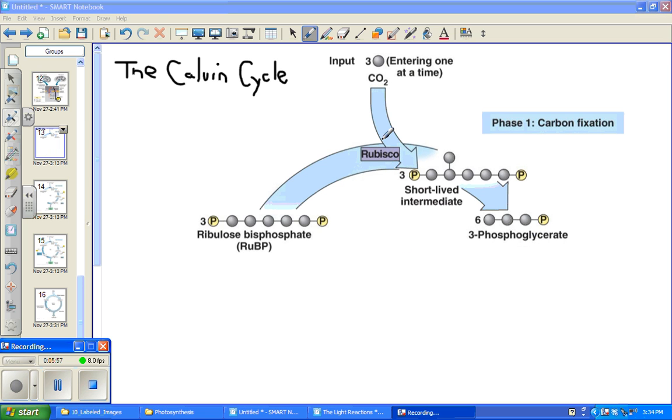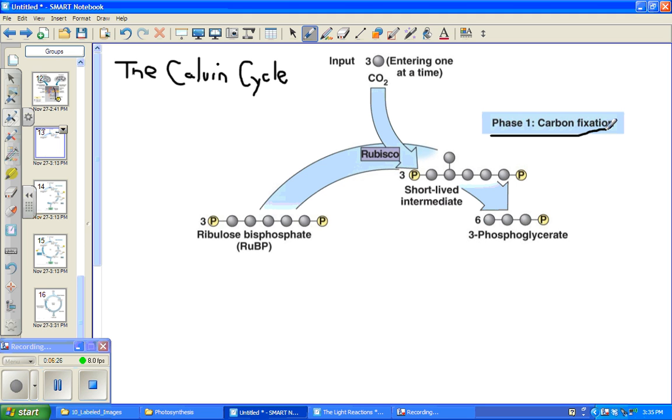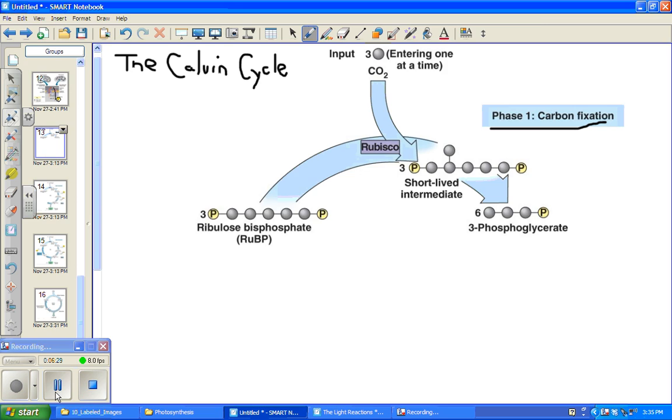Going back to rubisco, rubisco is the most abundant protein in chloroplasts and thought to be the most abundant protein on earth. Again, make sure you remember that rubisco is the enzyme that takes the CO2s entering and attaches them to ribulose bisphosphate, producing a short-lived intermediate. And make sure you understand that rubisco is the enzyme that's important in the process of carbon fixation.